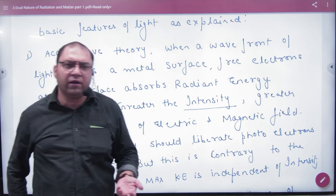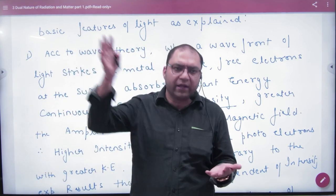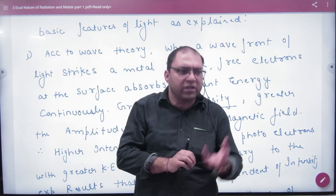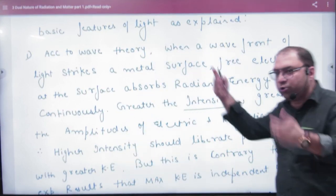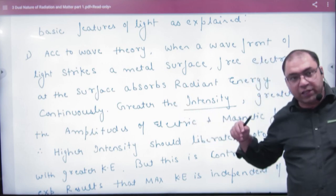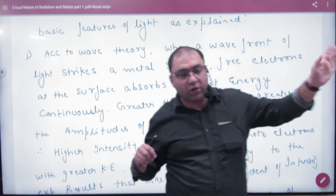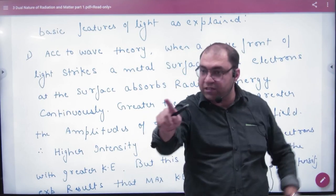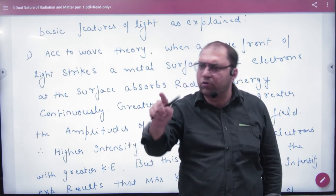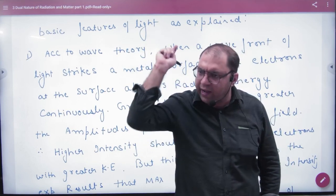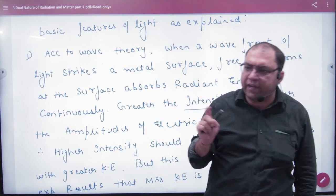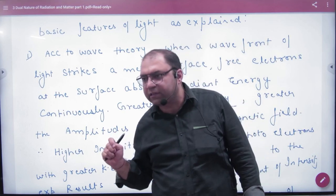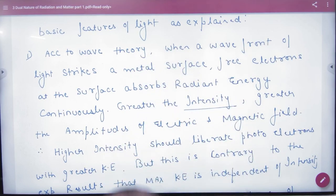light strikes a metal surface, free electrons in the surface absorb radiant energy. When light hits, the electron absorbs the wave energy. Now if I increase the intensity of wave, in wave theory intensity means to increase the energy, the number of photons.